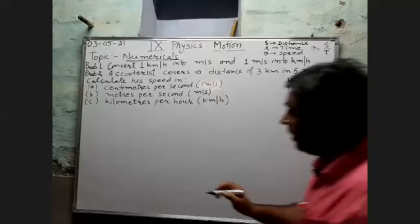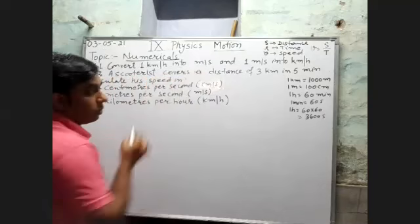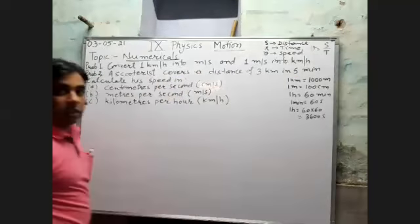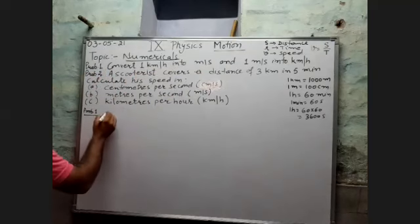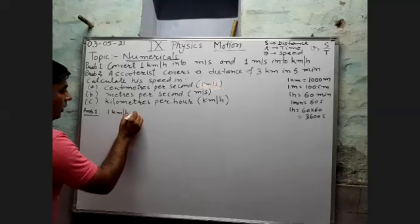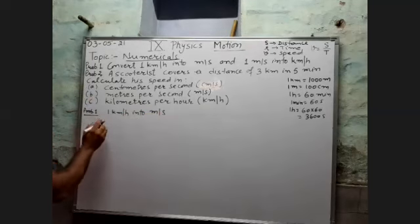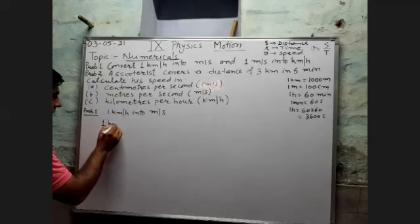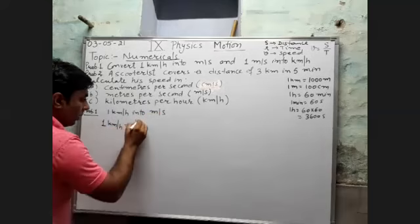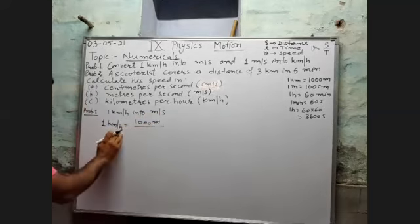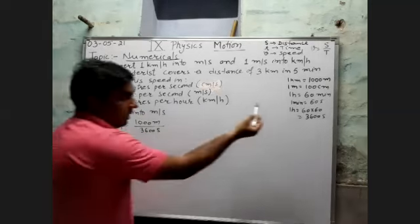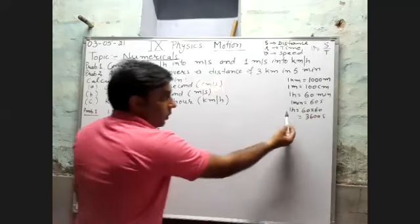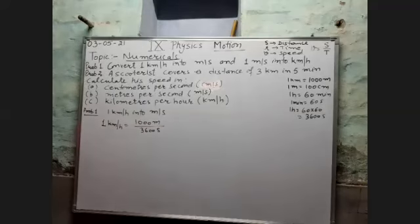Let's do the first problem: convert one kilometer per hour into meter per second. One kilometer per hour means one kilometer — that is one thousand meters — divided by one hour, which is 3600 seconds. One hour equals 60 multiplied by 60, which is 3600 seconds.